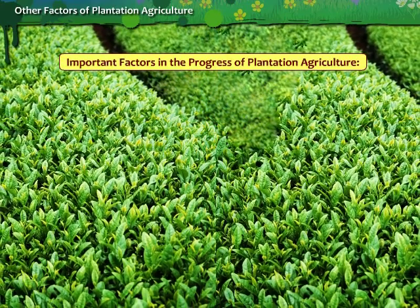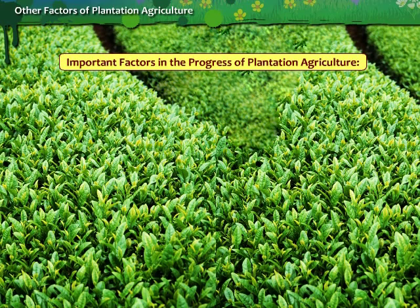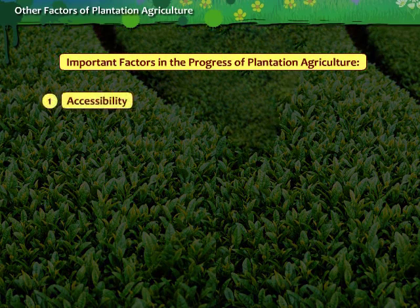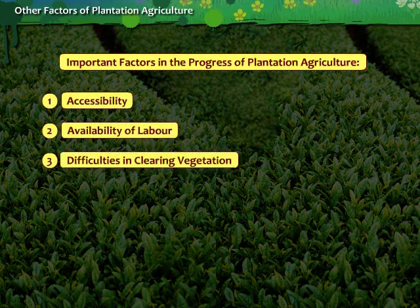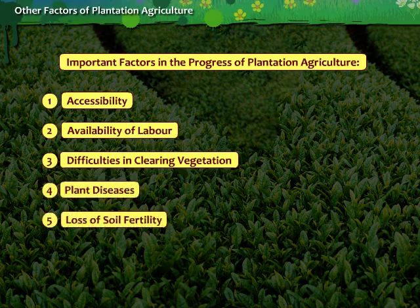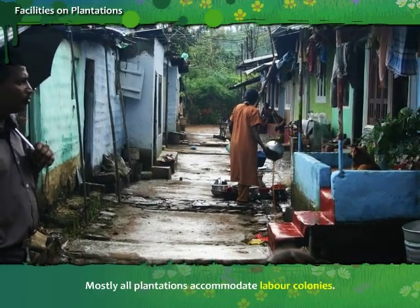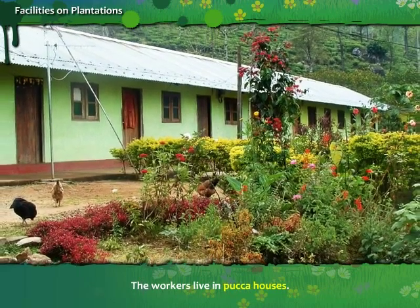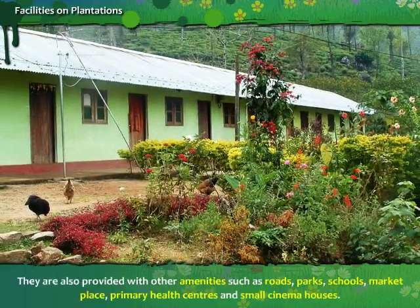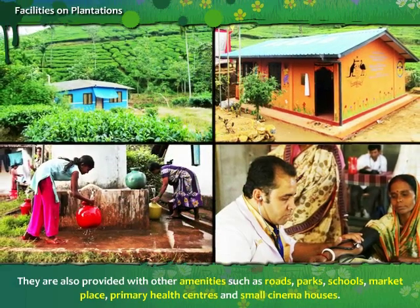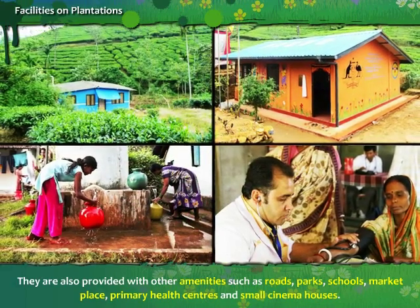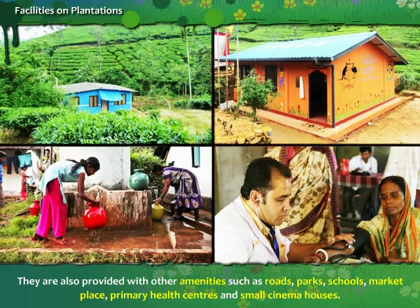The other most important factors in the progress of plantation agriculture are accessibility, availability of labor, difficulties in clearing vegetation, plant diseases, loss of soil fertility and government policies. Mostly all plantations accommodate labor colonies. The workers live in parka houses and are also provided with other amenities such as roads, parks, schools, marketplace, primary health centers and small cinema houses.